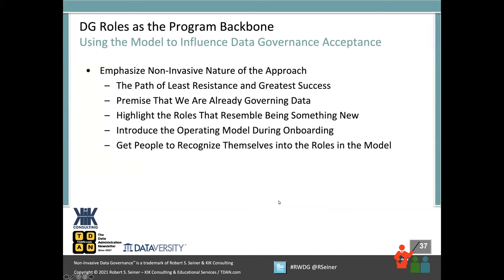One more role in the model is the working teams — because that's exactly what they are. They're made up of individuals who are knowledgeable about the data. You're already creating working teams. You already have project teams assembled of subject matter experts. I tell organizations they can recognize who's playing the roles in their organization just by looking at existing projects taking place. There are a lot of different roles, but you're doing a lot of these roles already. The working teams are something I find already used at a lot of organizations. I didn't include them in the detailed description because what they do depends on the opportunity being addressed or the issue being resolved.